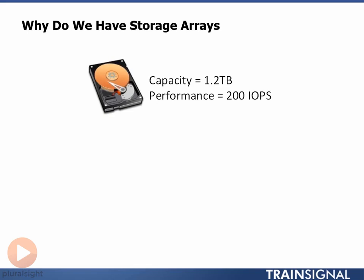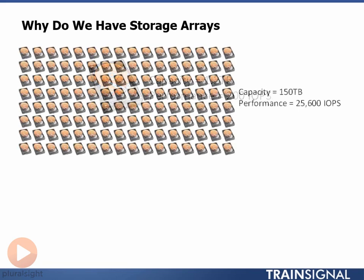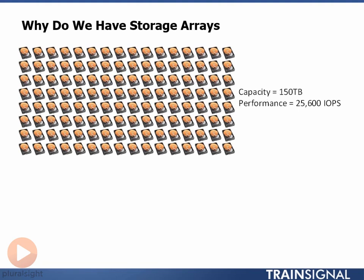As we show in the diagram, one drive equals 200 IOPS. If we pool 128 of them — still a modest number compared to large storage arrays that have thousands of drives — we suddenly have over 25,000 IOPS to play with.